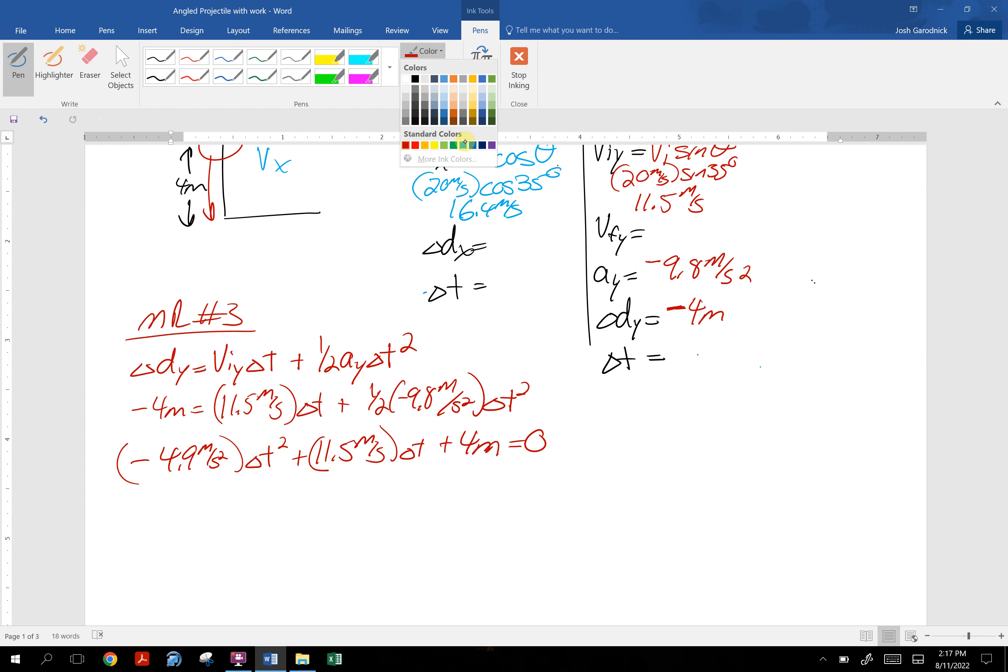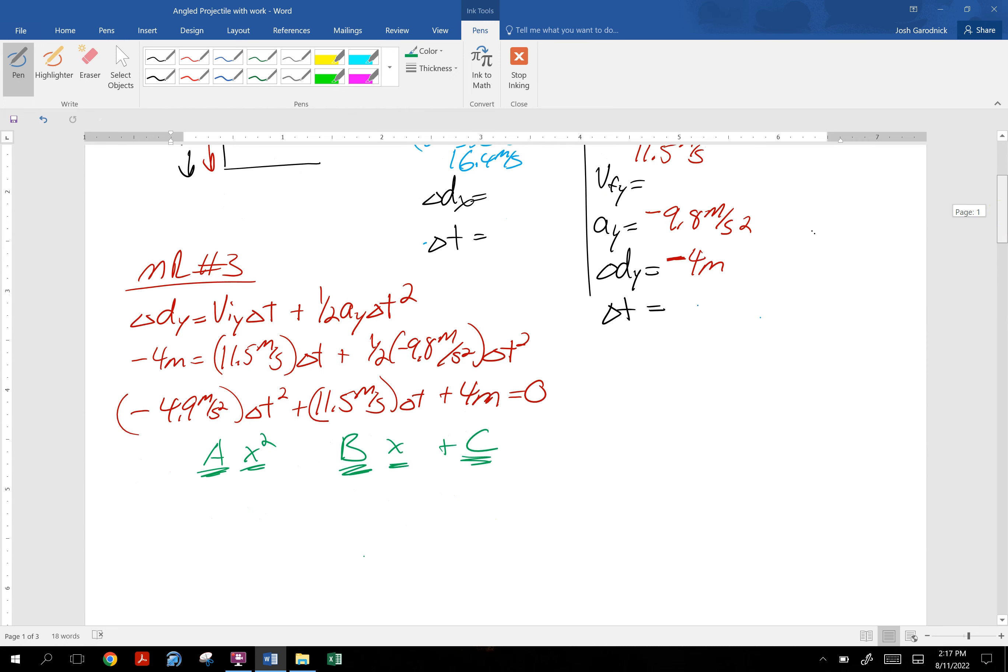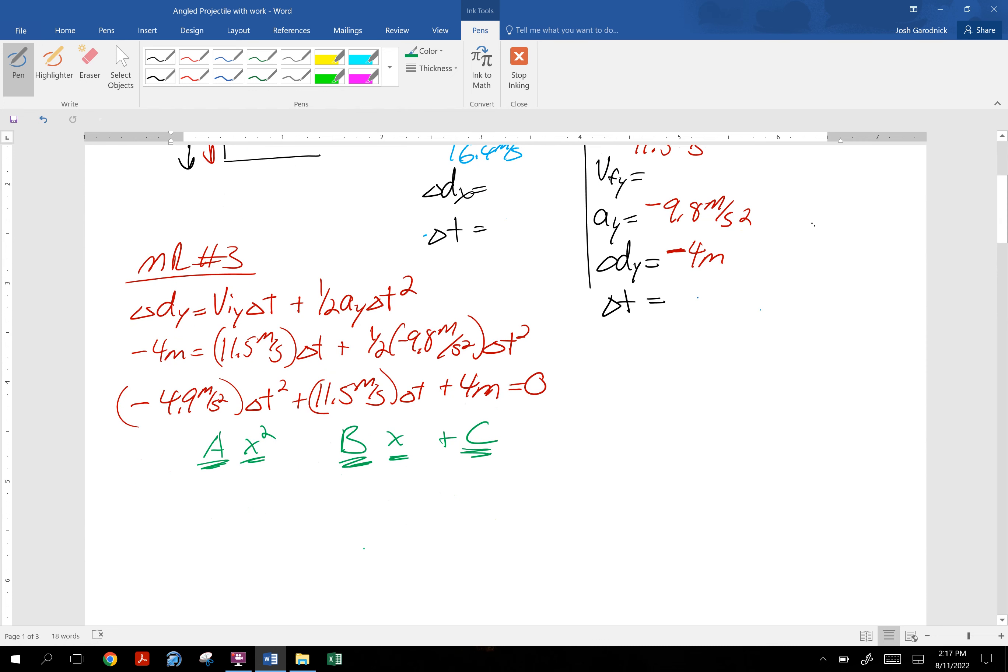This, ladies and gentlemen, is a quadratic. This is your A times X squared term. This is your BX term, and this is your C. Instead of X squared, it's T squared, so don't let that bother you. So we have a quadratic, and if you have not programmed your calculator at this point with the quadratic program, I don't know what your problem is. I've posted videos. I've told you to do it. You need to do it. Get it done.